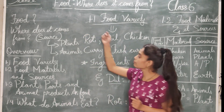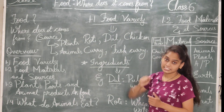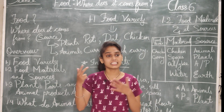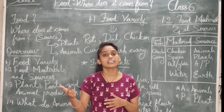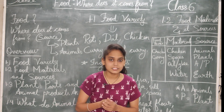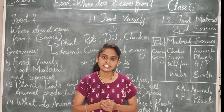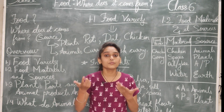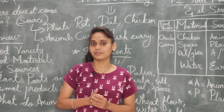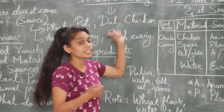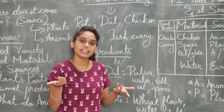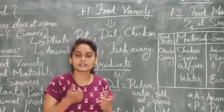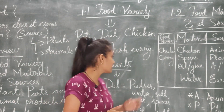Now let's start with 1.1 that is food variety. अलग-अलग food varieties होते हैं। जैसे अलग-अलग countries में, अलग-अलग states में अलग-अलग people present होते हैं, तो उनका खाने का तरीका और शौक अलग होता है। तो food items के कितने varieties होते हैं, उसके बारे में हम बात करने वाले हैं।